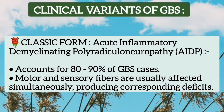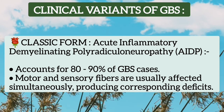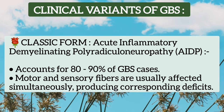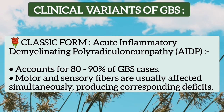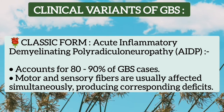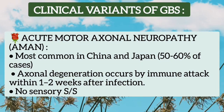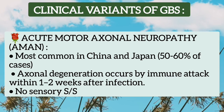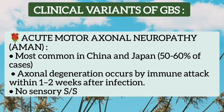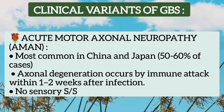There are four important clinical variants of Guillain-Barré syndrome. The first is the classic form, acute inflammatory demyelinating polyradiculoneuropathy, which accounts for about 80 to 90% of GBS cases. Both motor and sensory fibers are affected simultaneously. The second clinical variant is acute motor axonal neuropathy, which is more common in China and Japan. In this form, only motor nerves are affected, with axonal degeneration and only motor symptoms; no sensory symptoms are present.